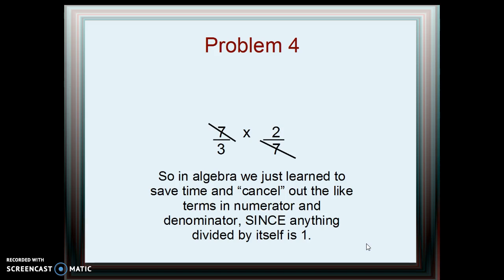We learned in algebra that we can save time and cancel out like terms in the numerator and denominator, since anything divided by itself is 1. It doesn't matter where it shows up, as long as one's in the numerator and the other's in the denominator. So the answer is two-thirds.